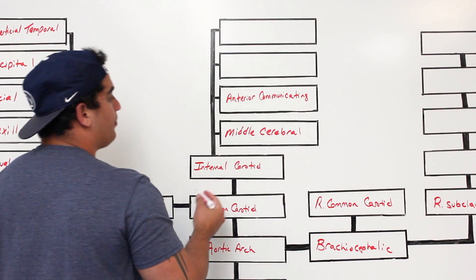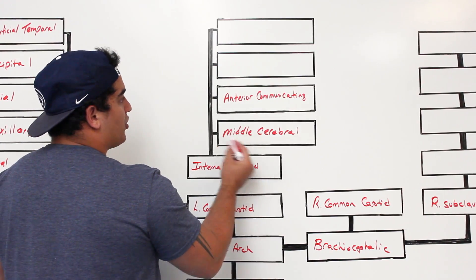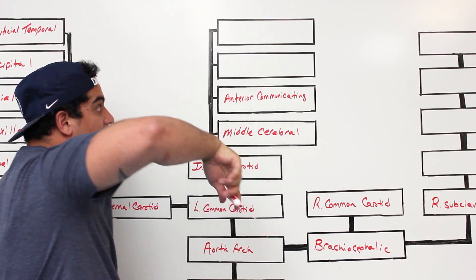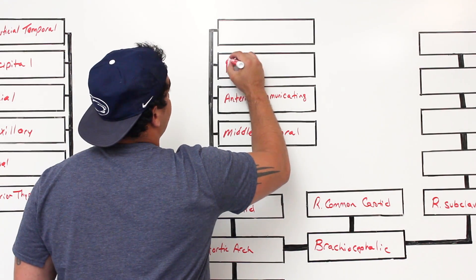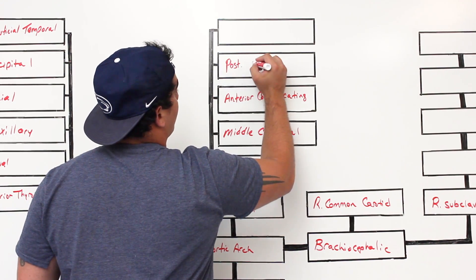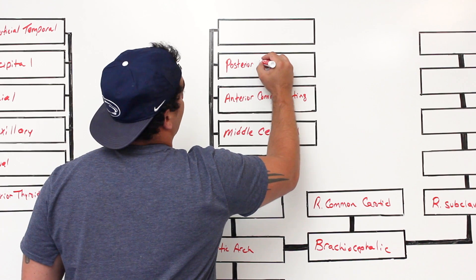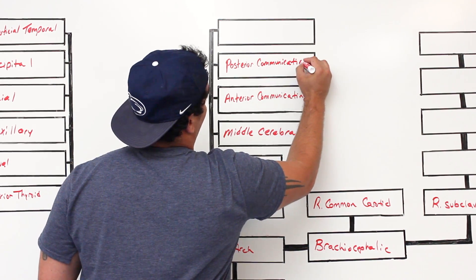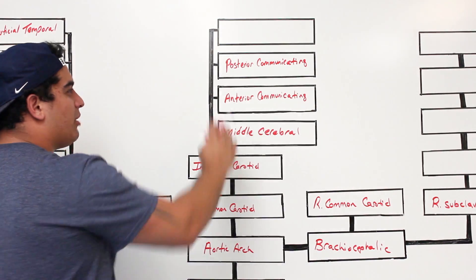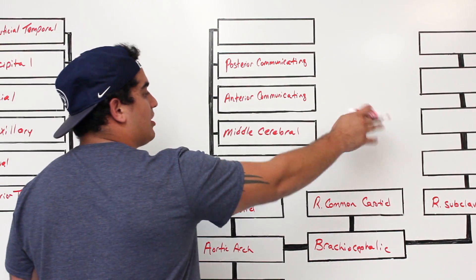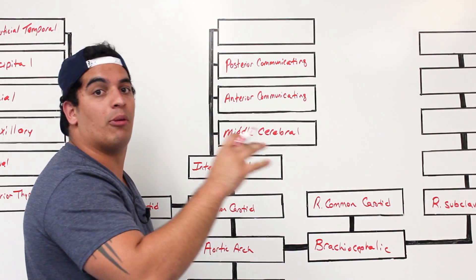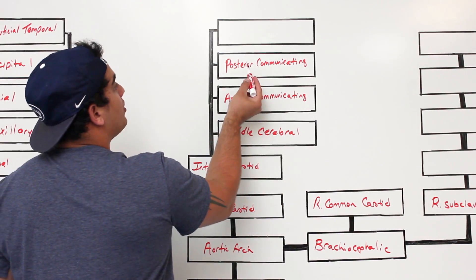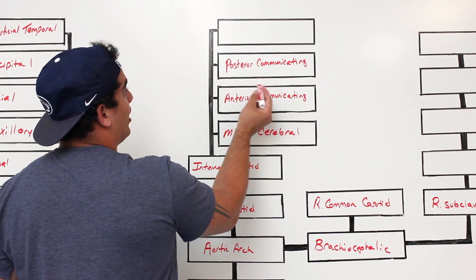The internal carotid artery gives off the middle cerebral, the anterior communicating, and also a branch going posterior called the posterior communicating artery. The posterior communicating artery is important because it interacts with structures from the vertebral-basilar system, which we'll get to shortly.